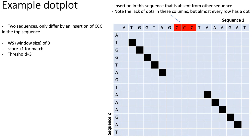You go through this process for every row against every column in the entire table. Because sequence one matches sequence two exactly except for an insertion, you'll see roughly two diagonals in the dot plot. One key feature is that for the three bases corresponding to the insertion in sequence one, there's no dot in those corresponding columns — because the inserted sequence has no matching position in sequence two.